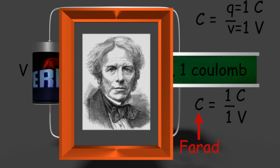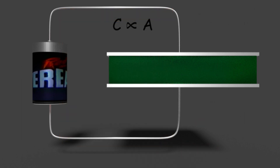Now it is understood that the charge required to be stored in a capacitor for developing a certain voltage across it is proportional to the capacitance of the capacitor. How much charge is accumulated on the opposite plates for developing a certain voltage depends on the area of the capacitor plates. If the area of the plates is larger, more charge can accumulate on the plates for the same voltage. If the distance between the plates is smaller, more charge can accumulate on the plates for the same voltage. Therefore, capacitance is directly proportional to the plate area A and inversely proportional to the distance d between the plates, giving C is proportional to A by d.